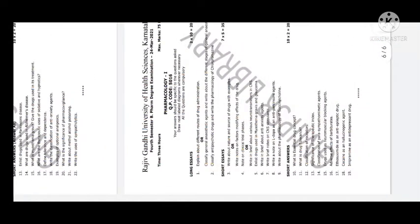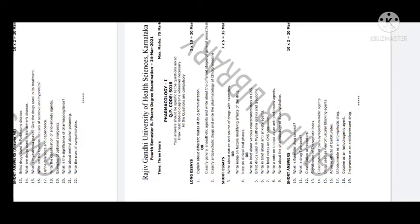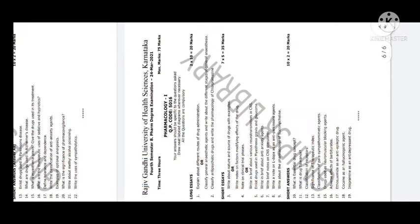General anesthesia stages are very important. The same question on different routes of drug administration was repeated in 2021. Classify general anesthetic agents and write about the different stages of general anesthesia — this may also be asked in five marks. Note: the ten-mark question may be asked in five marks and the five-mark question may be asked in ten marks. Then classify anti-psychiatric drugs with the pharmacology of chlorpromazine.